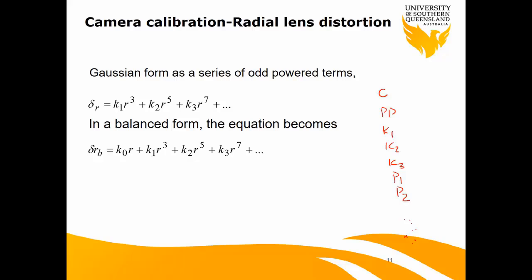K1 to K3 are parameters of the radial lens distortion. How is the software calculating them? Based on the Gaussian formula. K1, K2, K3 are those coefficients, which can be solved using different techniques — there is direct linear transformation, there is least squares — which can find those unknown coefficients. But it's not our business; the software will do it for us.